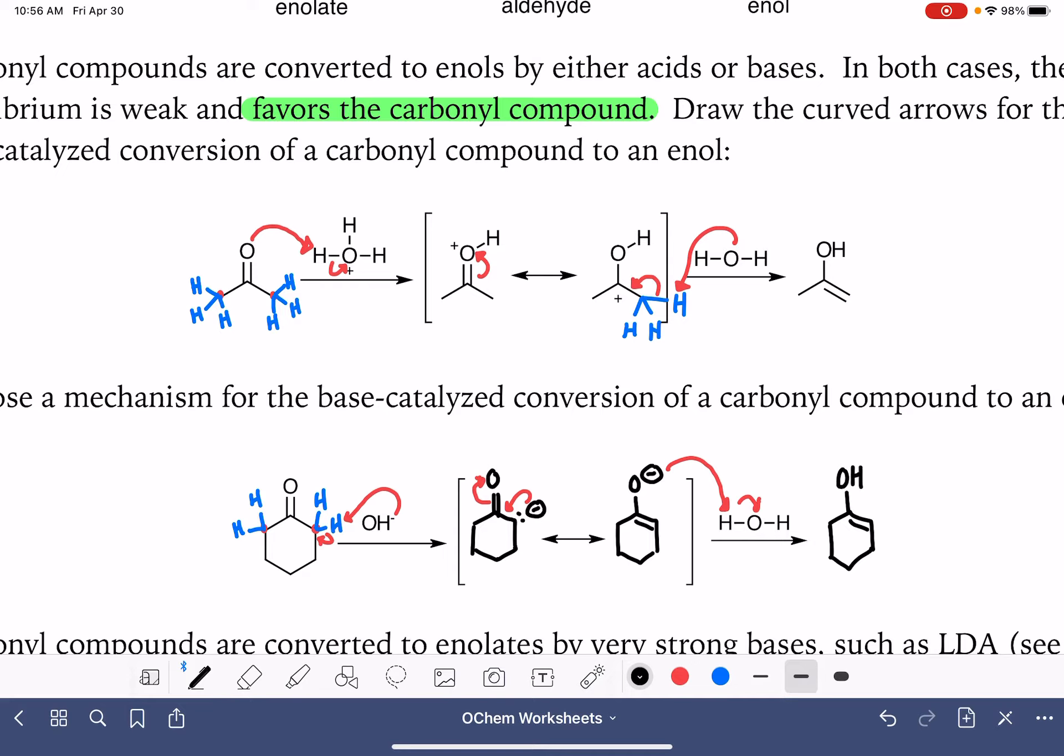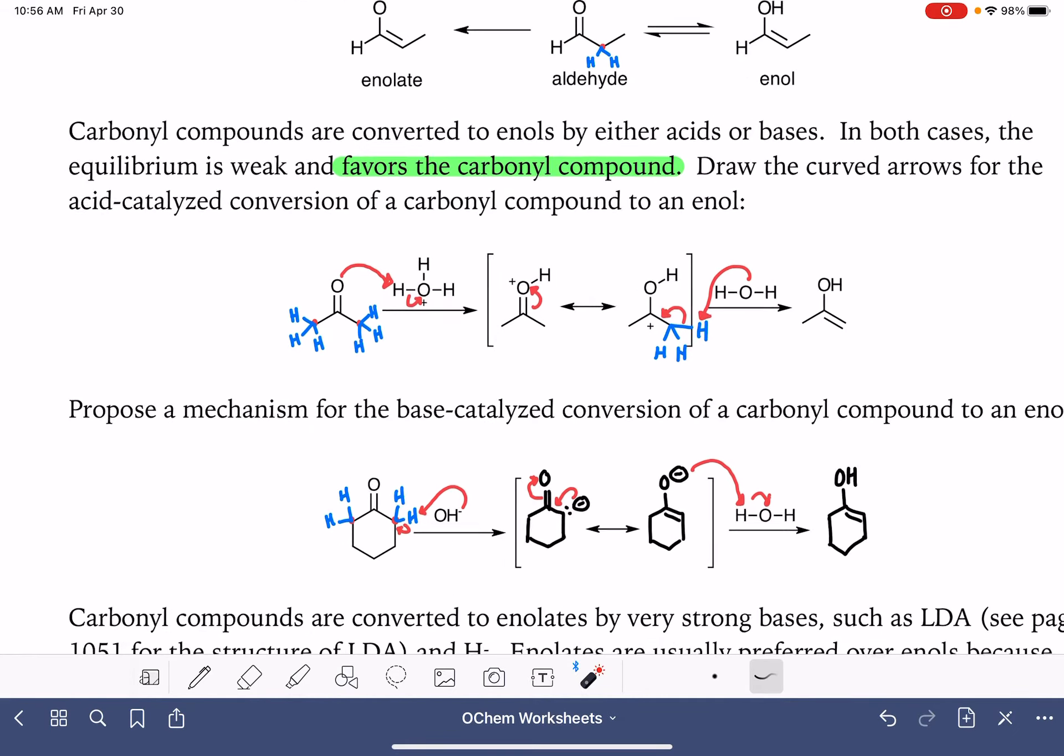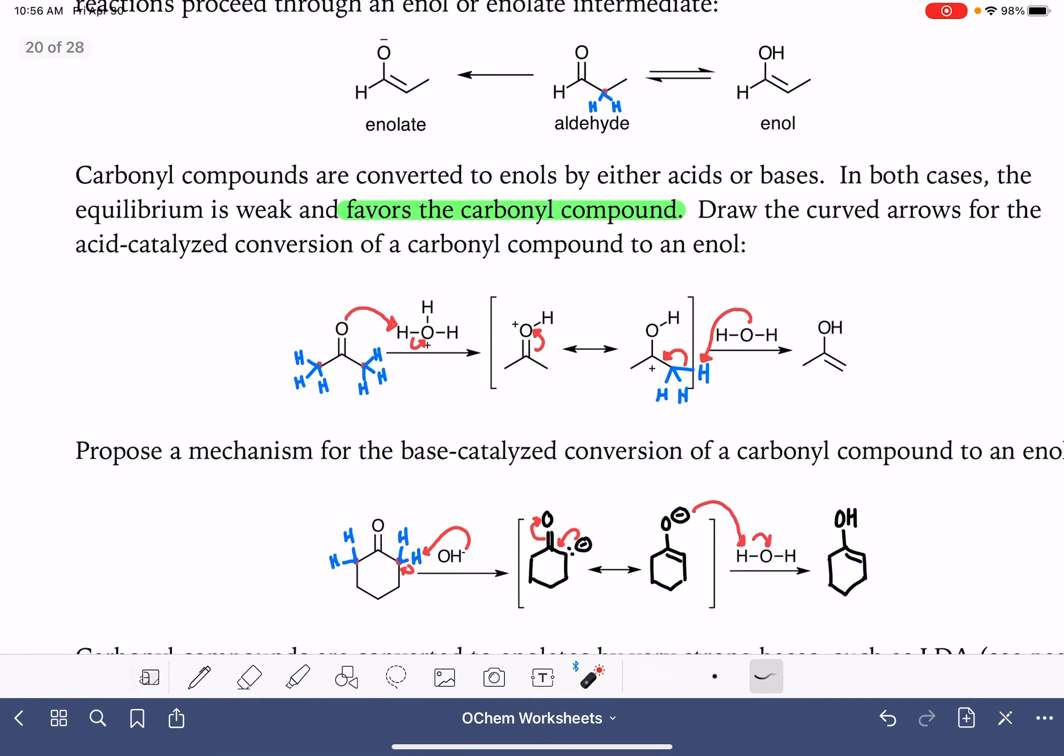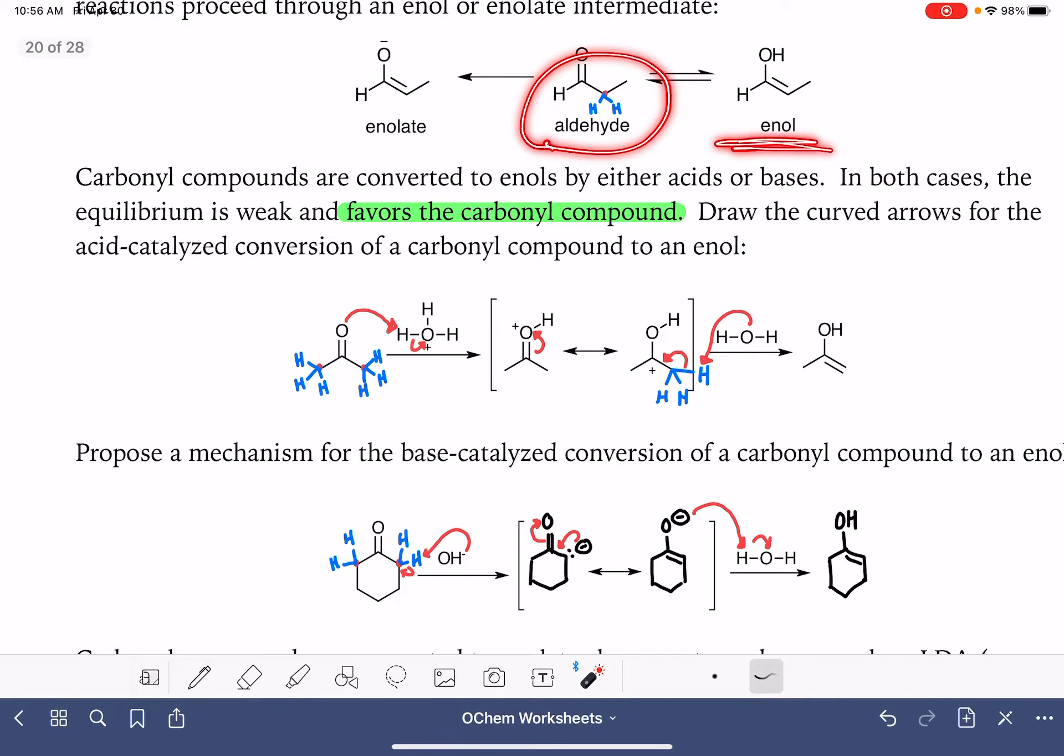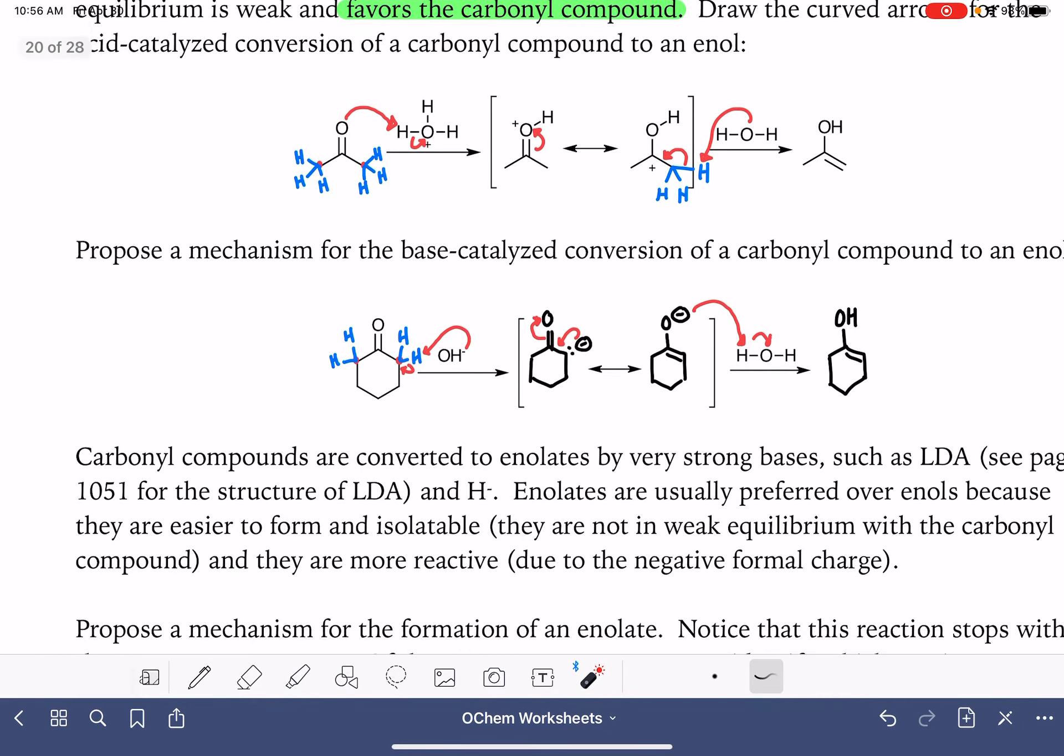And again, this is a weak equilibrium. So the majority of our product is going to stay as a ketone. And that is the conversion of an aldehyde or a ketone into an enol. Now let's talk next about converting into an enolate.